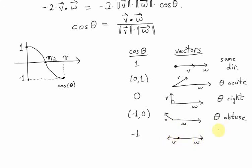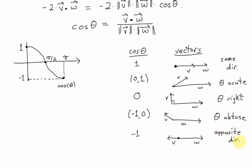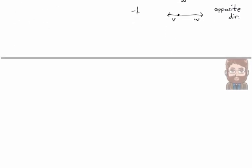They lie on the same line, but they're pointing in opposite directions. So again, doing this calculation with the dot product and the lengths can tell you a little bit about how the vectors are angled.